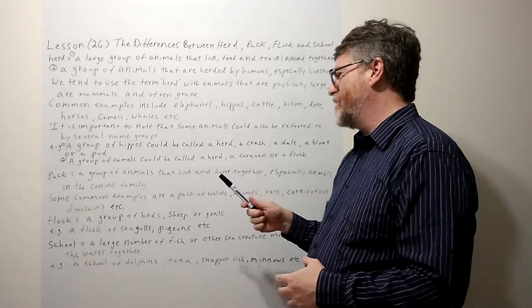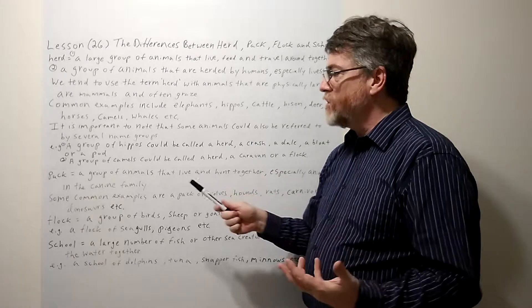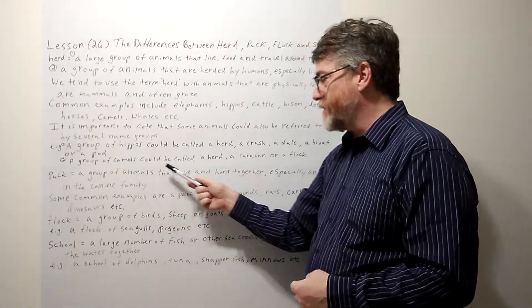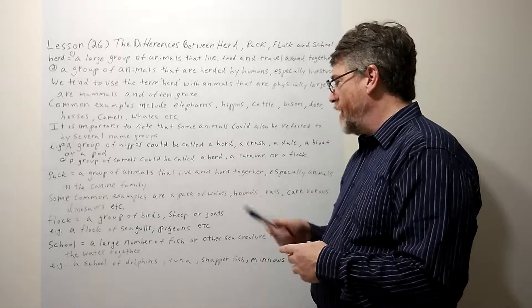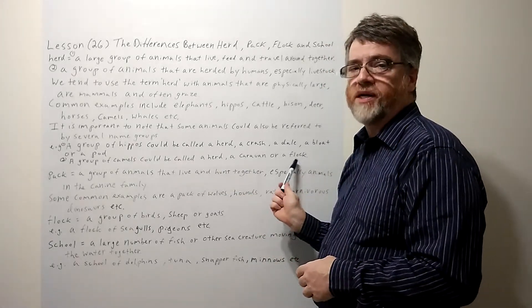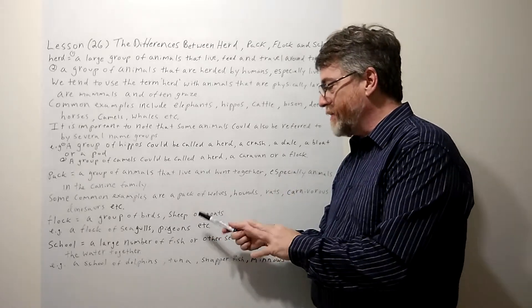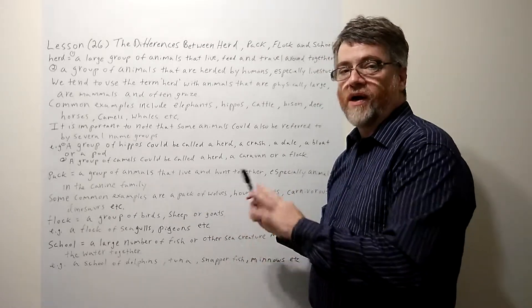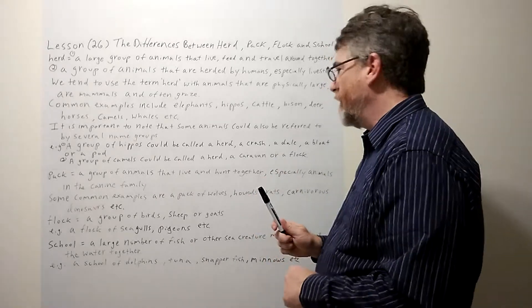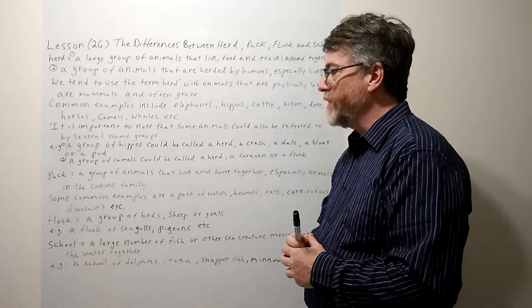Even though to be honest with you, I think I hear herd the most. But a group of camels could be called a herd, could be called a caravan, or it could also be called a flock. I was kind of surprised with that because we're going to get to flock later. That's all herds so far.